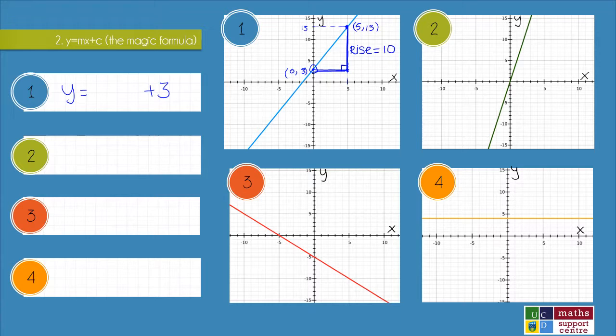The adjacent side of the triangle is called the run. And it's the difference between the x values. And that is 5 minus 0, which is 5. Our slope then is just rise over run. So it's 10 over 5, which is 2.